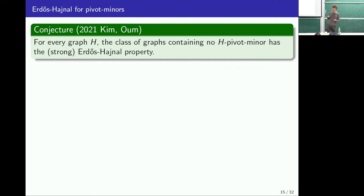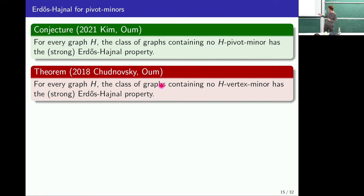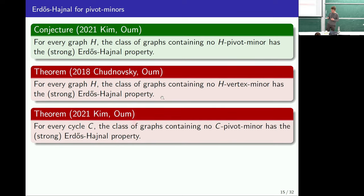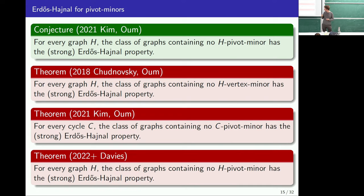Going to pivot minors, there's a conjecture that if you forbid a pivot minor, then you have the Strong EH property — a kind of pivot minor analogue of the Erdős-Hajnal conjecture, replacing forbidding an induced subgraph with forbidding a pivot minor. What was known before is that this is true for vertex minors instead of pivot minors, and we even have the Strong EH property there. It was also known for cycles: if you forbid a cycle as a pivot minor, you have the Strong EH property. One of our results is that if you forbid any arbitrary graph as a pivot minor, then you have the Strong EH property.